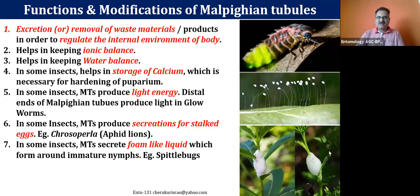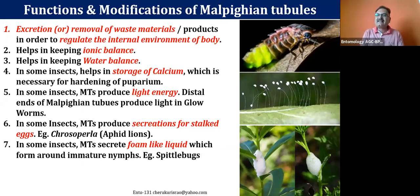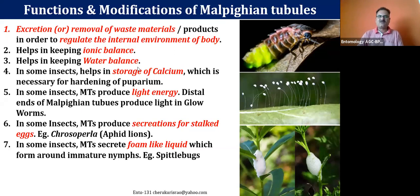Looking at the last picture, which shows spittle bugs — it looks like spit. The Malpighian tubules of the spittle bugs produce some kind of foamy material. That foam is secreted from the Malpighian tubules and is useful for safeguarding their just-hatched nymphs. The newly hatched nymphs are actually inside this foam. If you remove the foam, you will see the nymphs of the spittle bugs. These kinds of modifications are additional duties also performed by the Malpighian tubules.